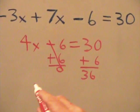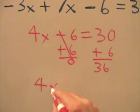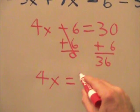So now we can rewrite the problem again. Then 4x equals 36.